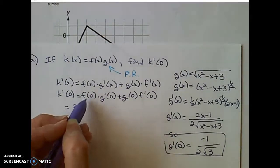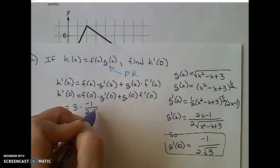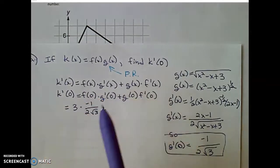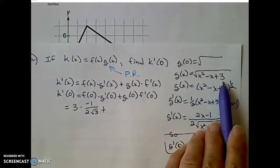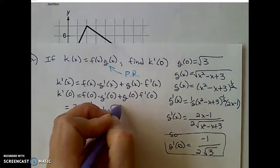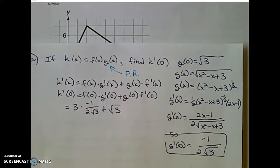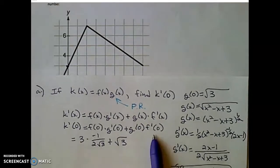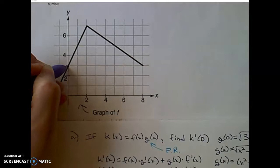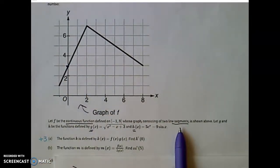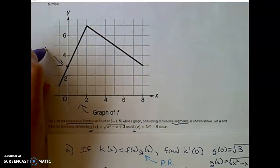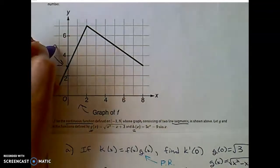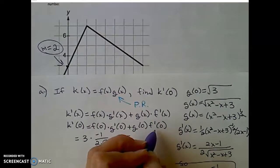Coming back to the product rule: F of 0 was 3, and G prime of 0 is negative 1 over 2 square roots of 3. Now, G of 0 is the square root of 0 minus 0 plus 3, which is the square root of 3. For F prime of 0, since F is made up of line segments, the derivative is just the slope of that linear piece at X equals 0 — up 2 over 1 — so F prime of 0 is 2.